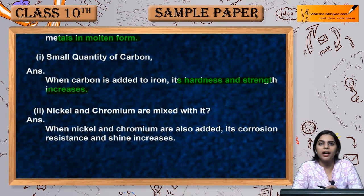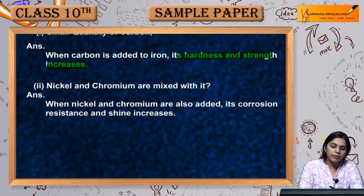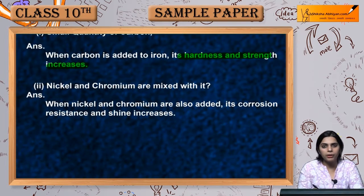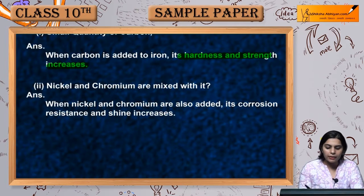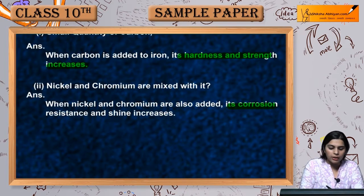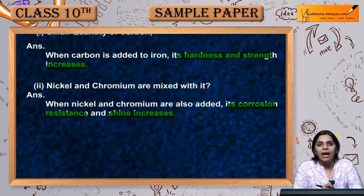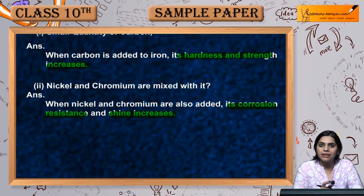If we add nickel or chromium to iron, its corrosion resistance and shine increases. When nickel and chromium are added to iron, the alloy that is made is steel — it is shiny and hard, and its strength increases.